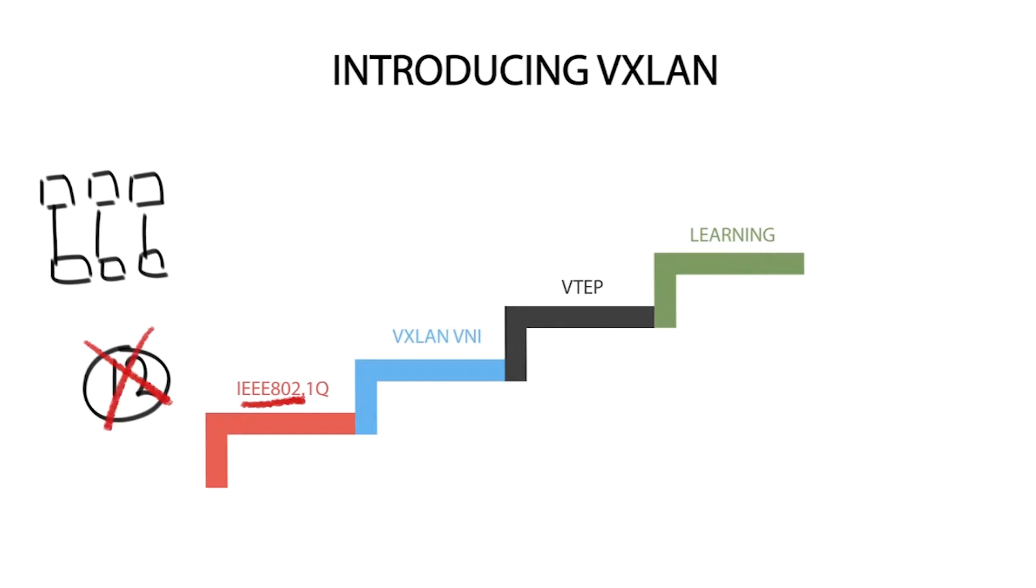Then came along VXLAN. VXLAN uses a 24-bit network segment ID called the VNI used for host identification. This is much larger than the 12 bits used for traditional VLAN identification. The VNI is just a fancy name for a VLAN ID but it now supports up to 16 million VXLAN segments.